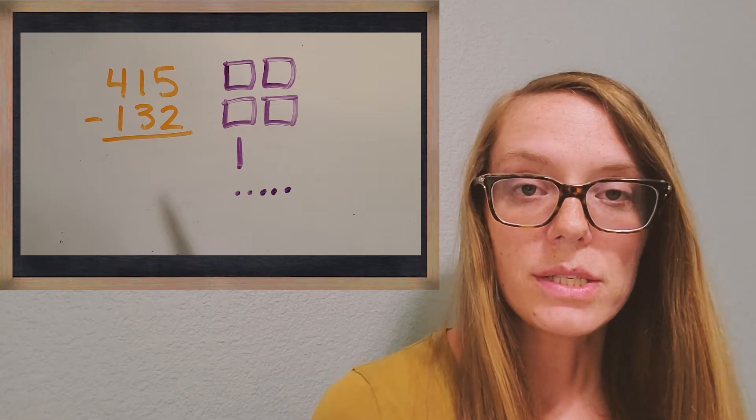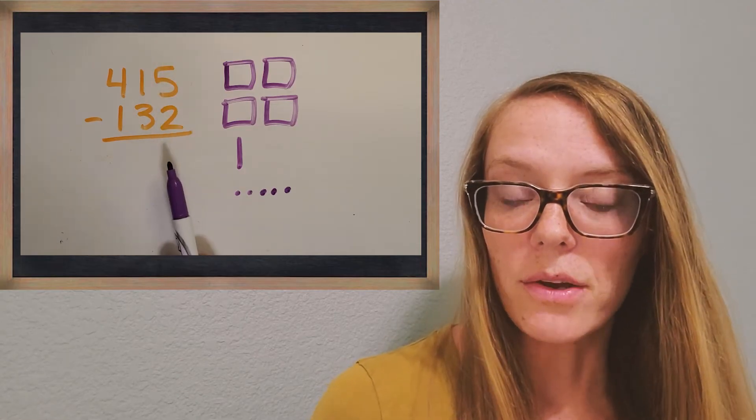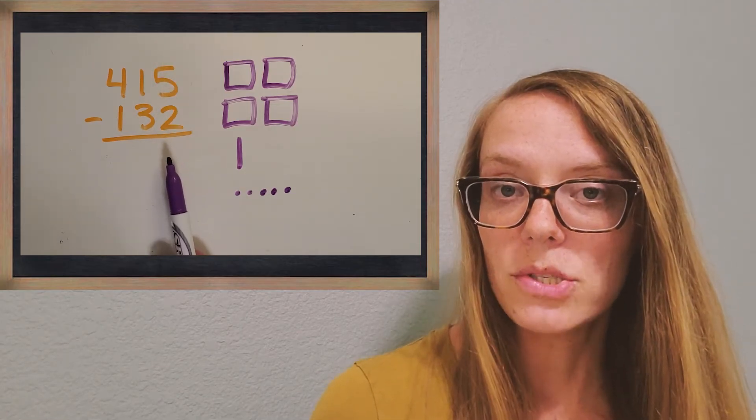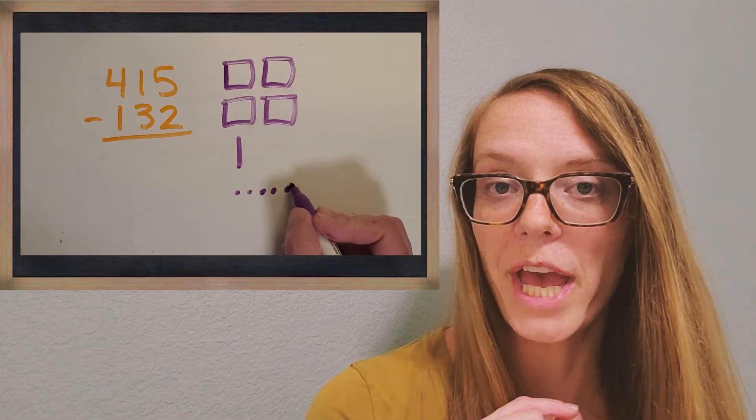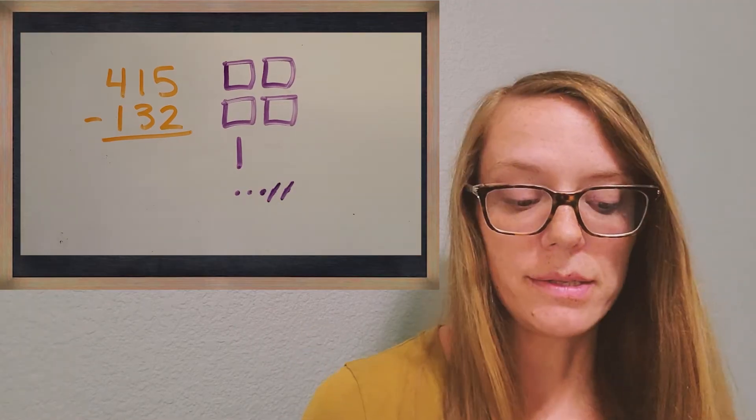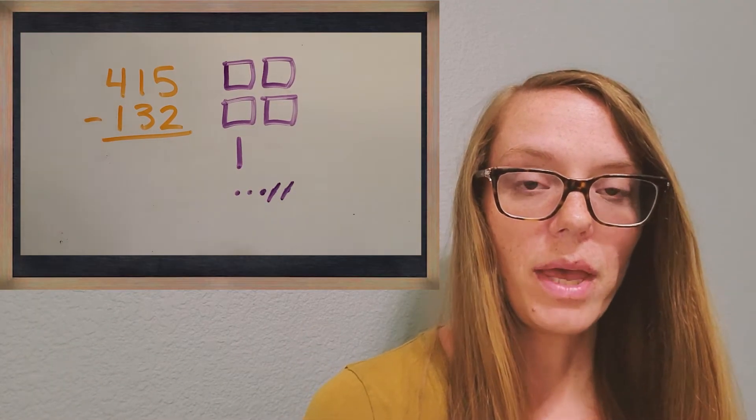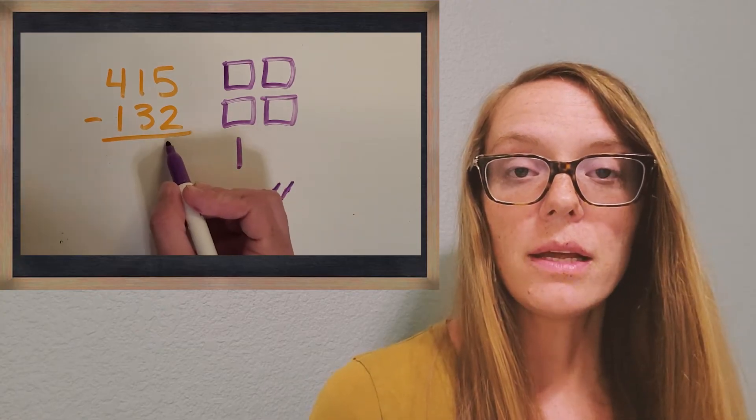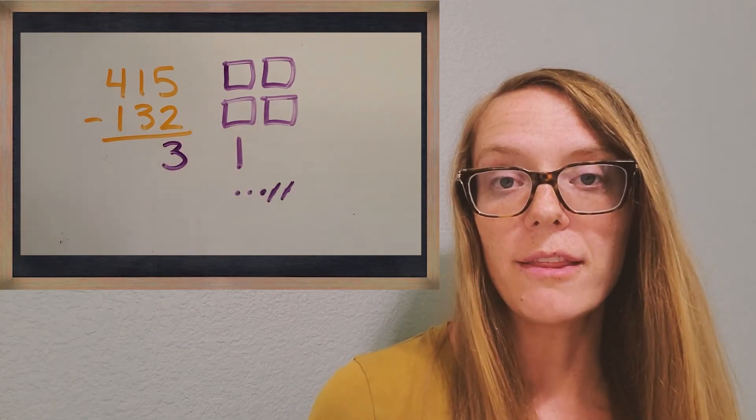So we're going to still start in the smallest place value. So what is 5 minus 2? We can always take away 2 units. Okay, great, you got 3. And so there's really no regrouping in that place.